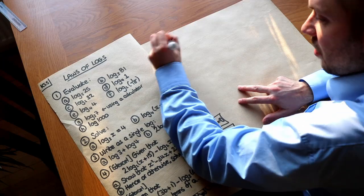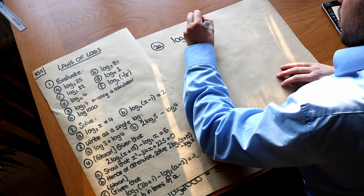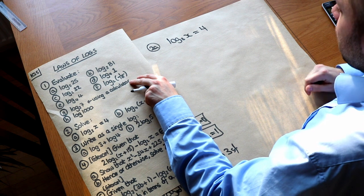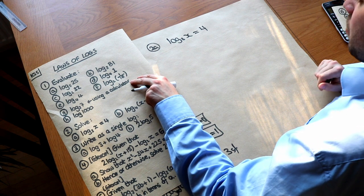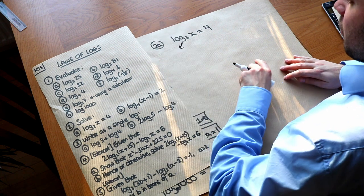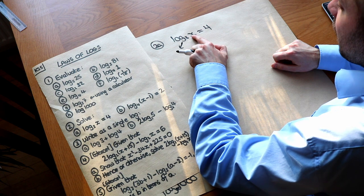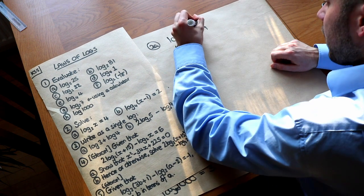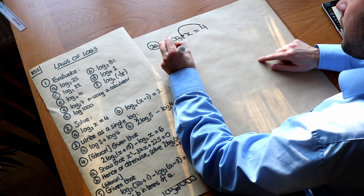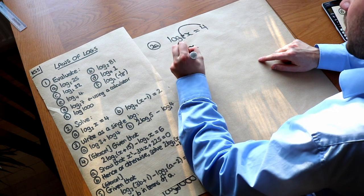Now let's solve these equations. We want to solve log base 3 of x = 4. I have two different methods — you can choose which you prefer. One method: log asks the question '3 to the power of what equals x?' and it's saying that answer is 4. So I insert 4 into the middle: 3 to the power of 4 is x. And 3 to the power of 4 is 81, so x = 81.